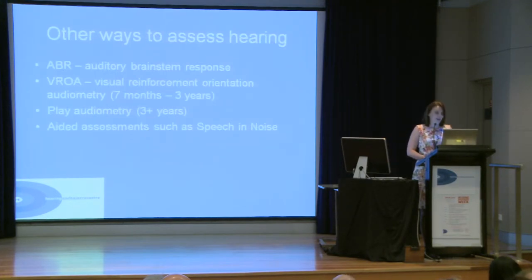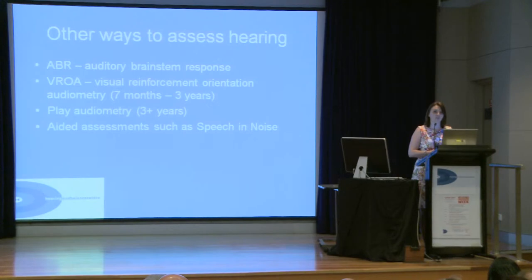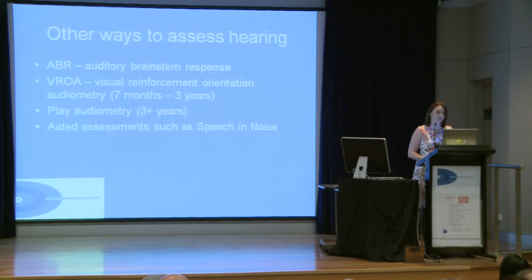There are other ways to assess hearing. The audiogram is the gold standard and is widely used. For different situations, we may also do what's known as an ABR — an auditory brainstem response — which is another clinical test we can use. For children, we use quite different tests, such as ROA or play audiometry. It's the same concept in that we're after a response to a sound, but it's age-appropriate. We also do some assessments with hearing aids in, to determine what benefit the hearing aids are giving while you're wearing them, including speech-in-noise tests or an aided audiogram.